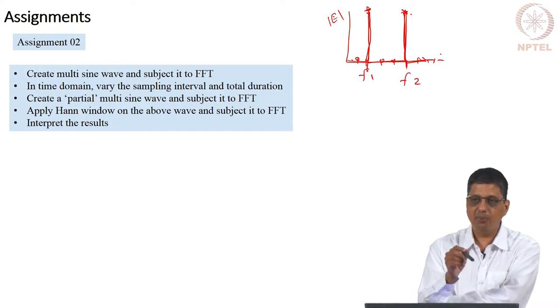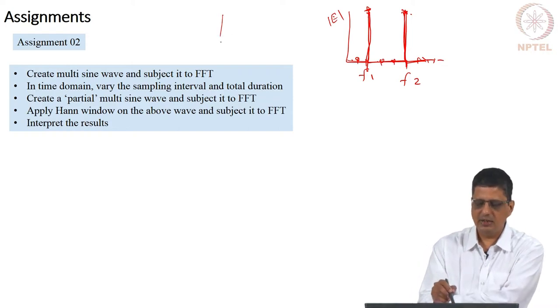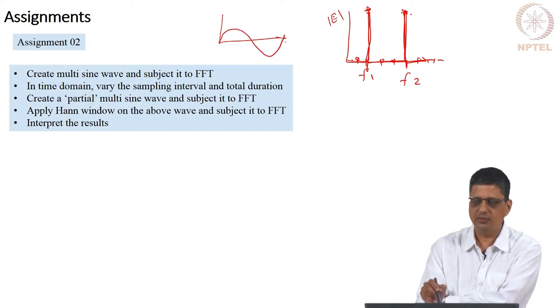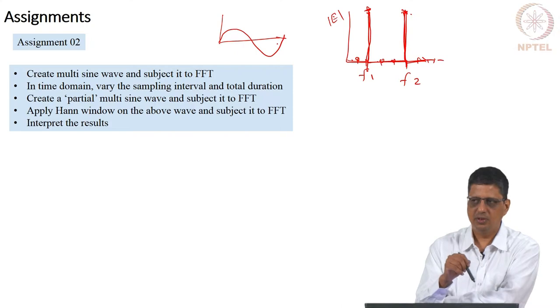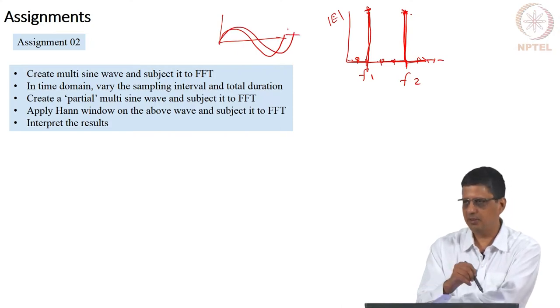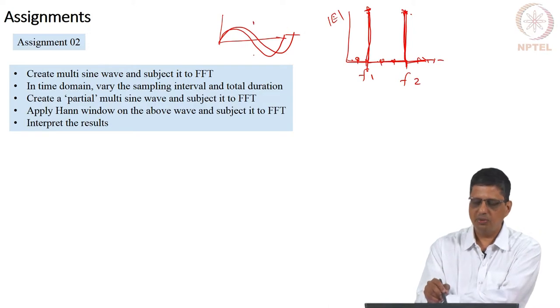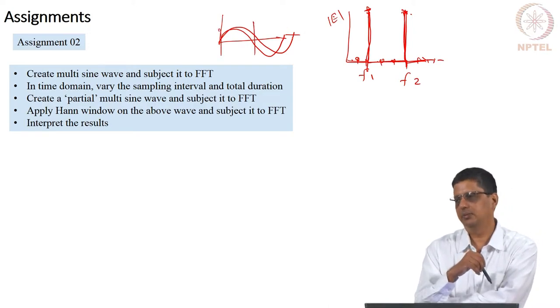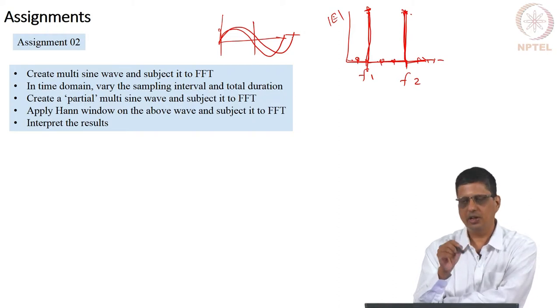Then I ask you to create a partial sine wave, that is you have about 0.4 hertz and 0.5 hertz. That means 0.5 hertz, you will need 2 seconds for it to complete a full cycle, 0.4 hertz, you will need little more than that, you will need 2.5 seconds to complete full cycle. You add them together, but you take the data only for 1 second. You are really giving partial wave, you are not given giving a full wave.